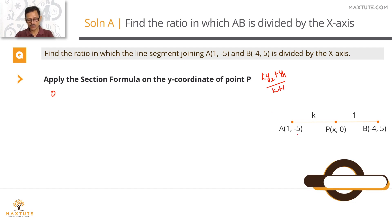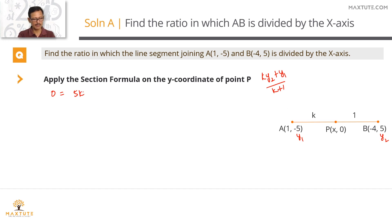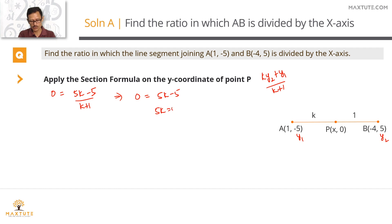We mark y₁ = -5 and y₂ = 5. So the y-coordinate of point P: 0 = (k × 5 + (-5)) / (k + 1), which gives 0 = (5k - 5) / (k + 1). Cross-multiplying, 5k - 5 = 0, which means 5k = 5, so k = 1. The x-axis divides this line segment in the ratio 1 is to 1.